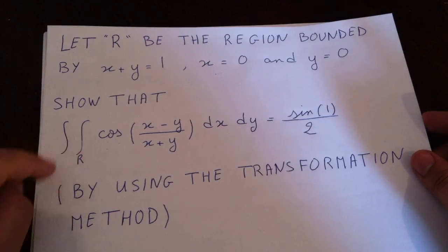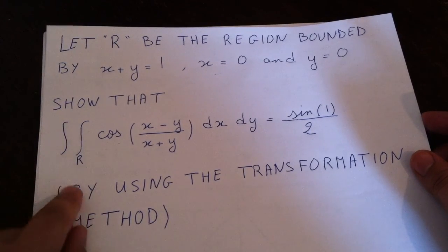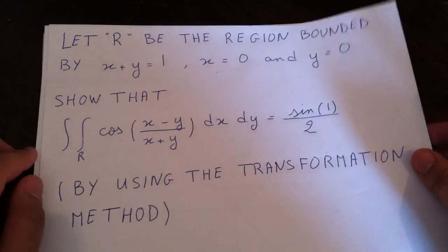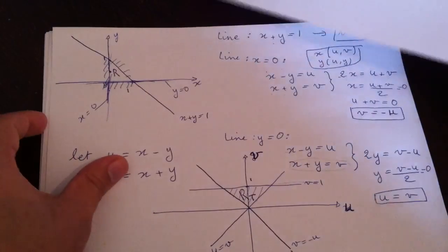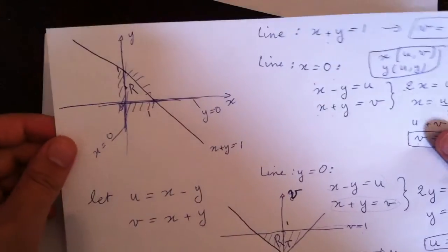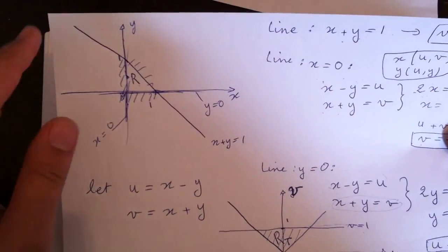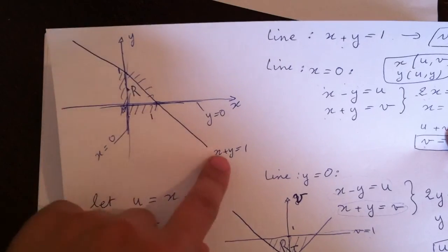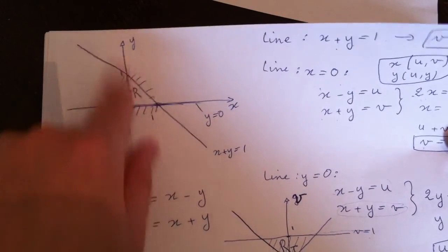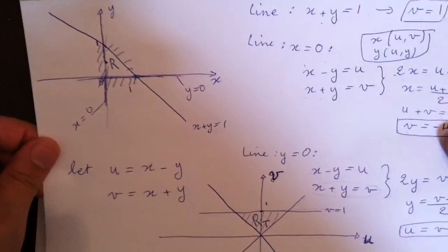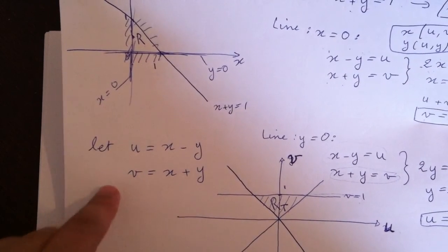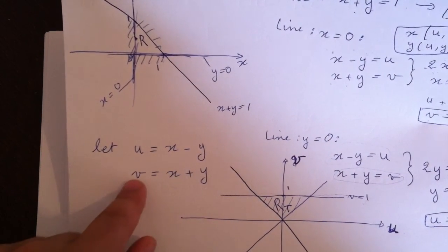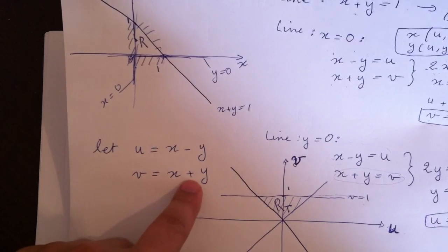We need to show using the transformation method that this double integral equals that. So what we did in the first part: we drew the transformed region — we drew first the region bounded by these lines — and then we chose the transformation u is equal to x minus y, and v is equal to x plus y.